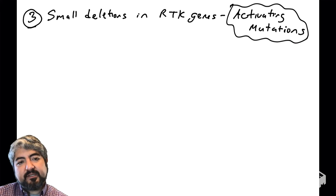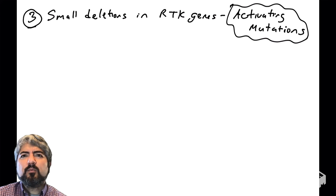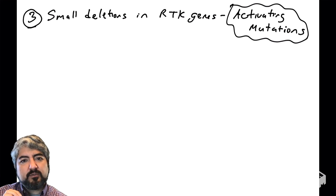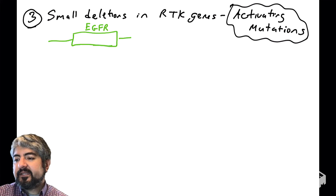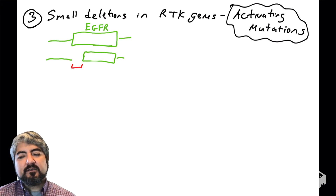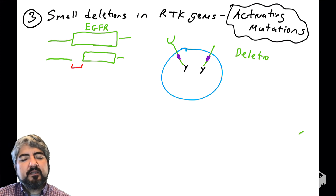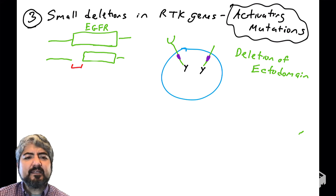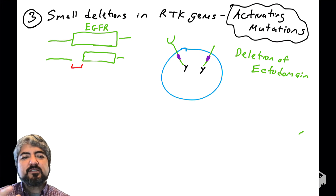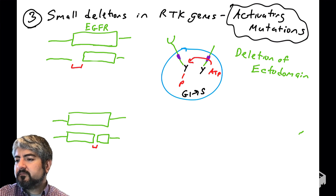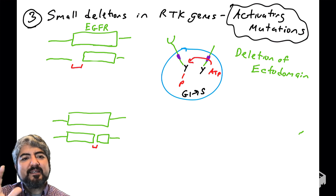The third example is small deletions in receptor tyrosine kinase genes. Deletions sound like something that would destroy the function of a protein — but they could just destroy the proper regulation of the protein. In some human cancers, the 5-prime end of the reading frame for EGFR is deleted. This deletion removes the coding part of the protein for the extracellular or ectodomain — so what you see is a headless receptor. When this headless receptor that's missing the ectodomain encounters another receptor, it will phosphorylate, because the 3D structure of the protein is now in a conformation that activates it.